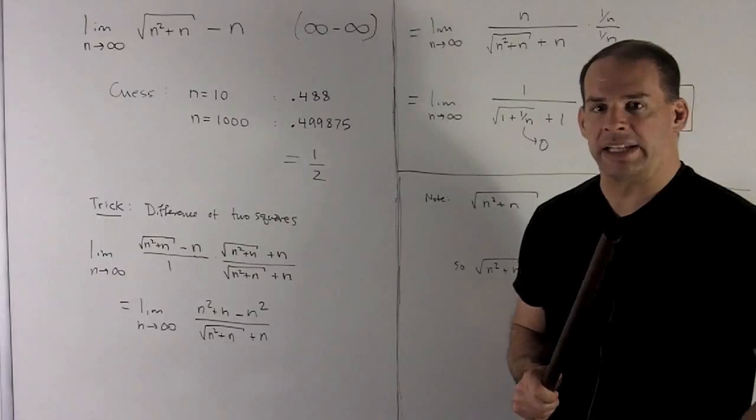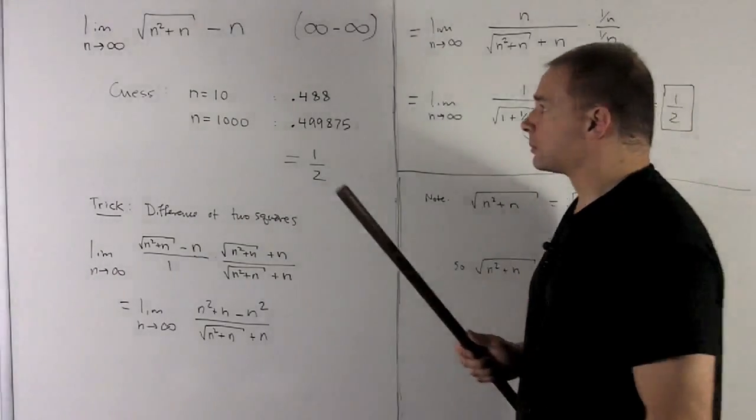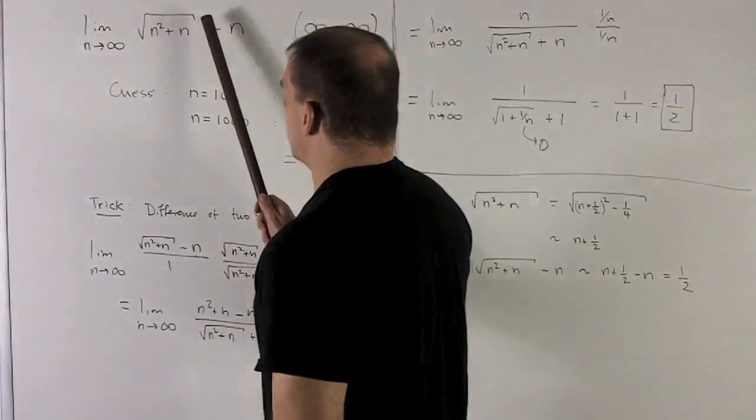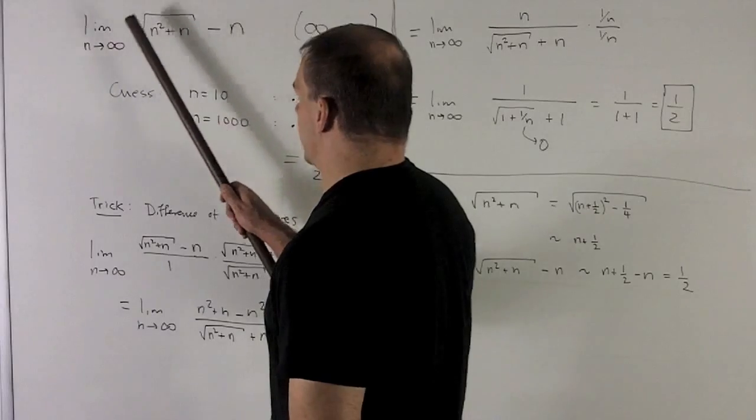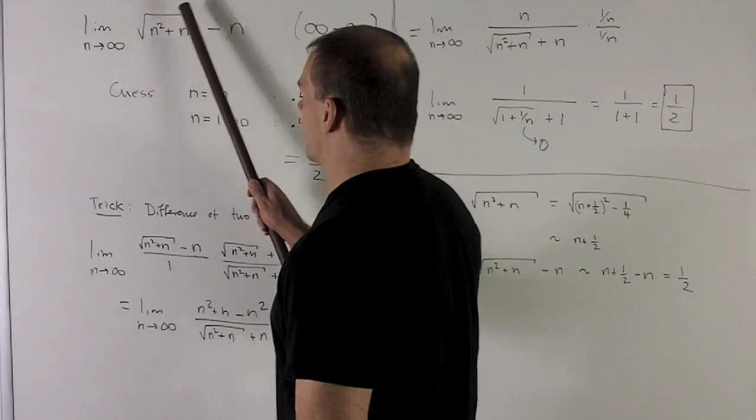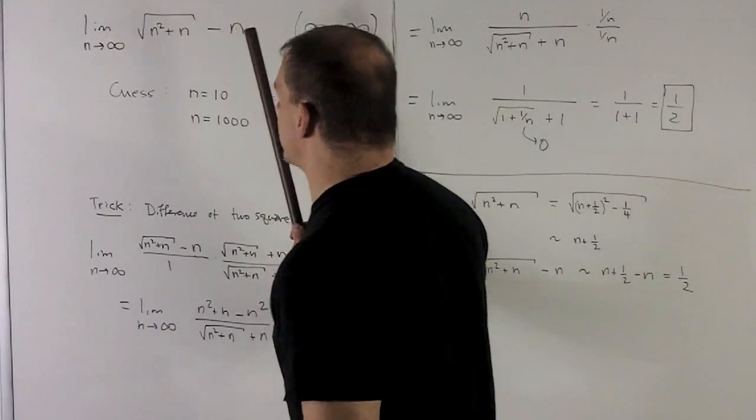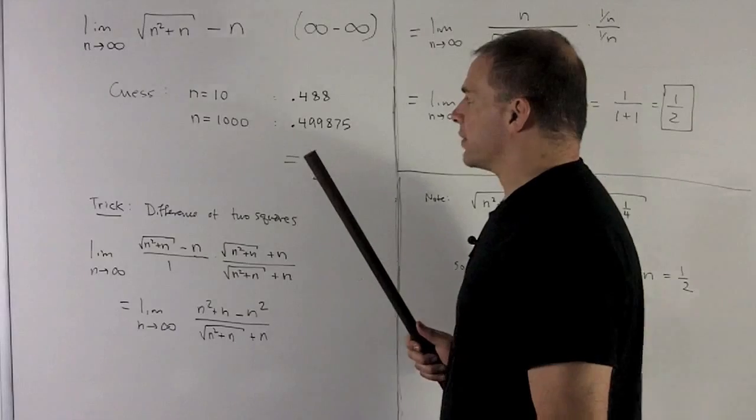So let's go to the technique. Well, if we look at this, I really don't like having to deal with a radical up here. It would be nice if we could remove this somehow and simplify things. So what I'm going to use is a difference of two squares.